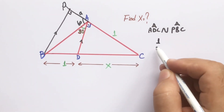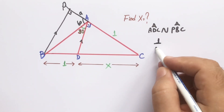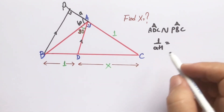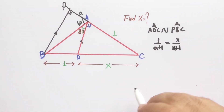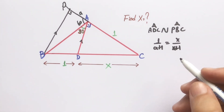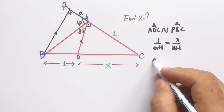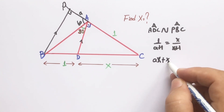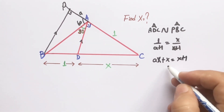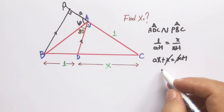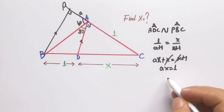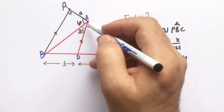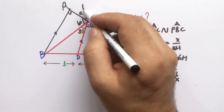From the similar triangles, we get: 1 over (a + 1) equals x over (x + 1). So a·x + x equals x + 1. The x terms cancel, therefore a is going to be 1 over x.